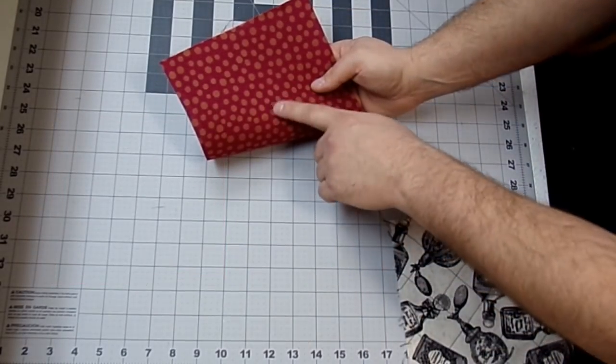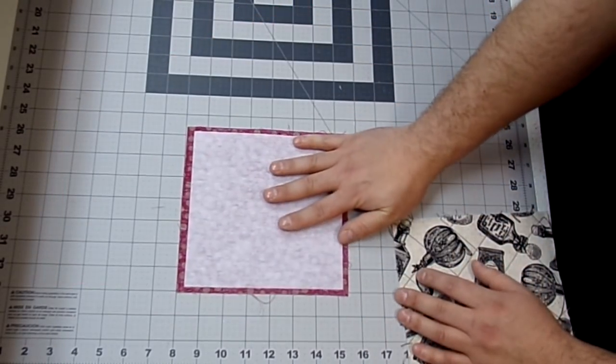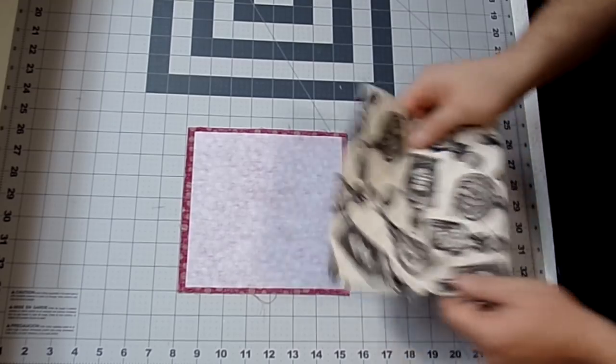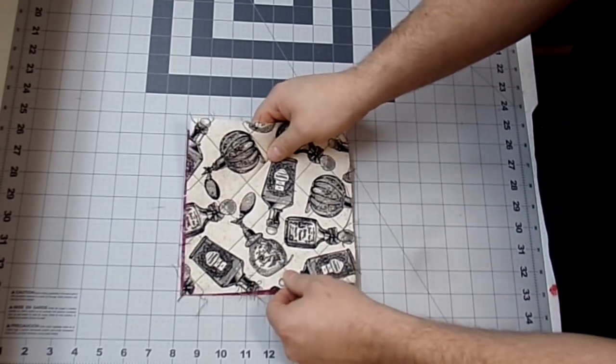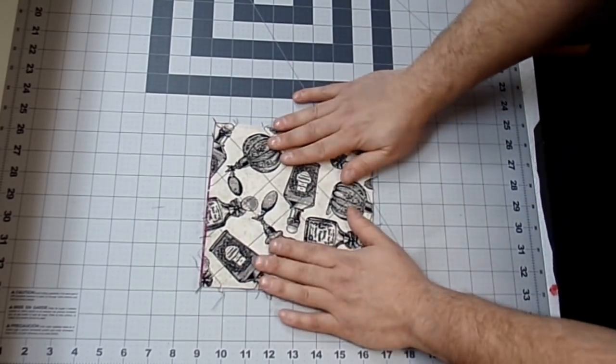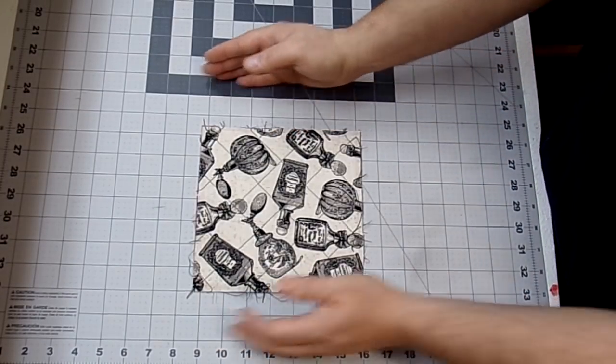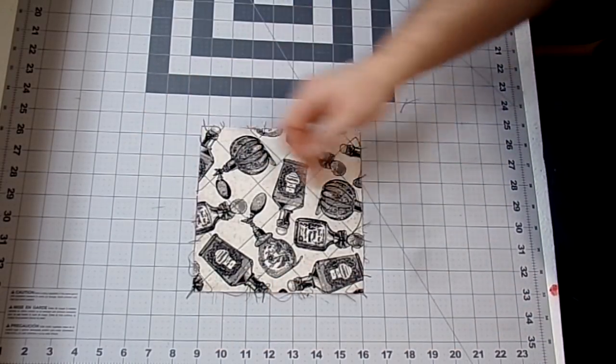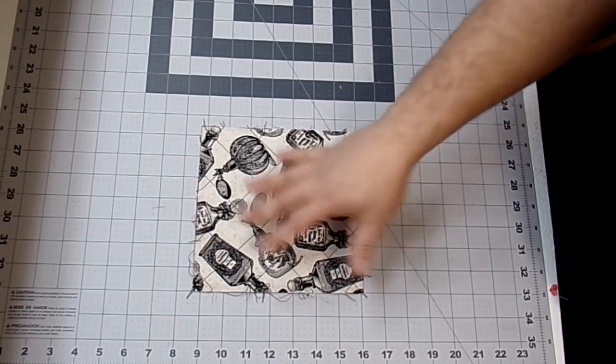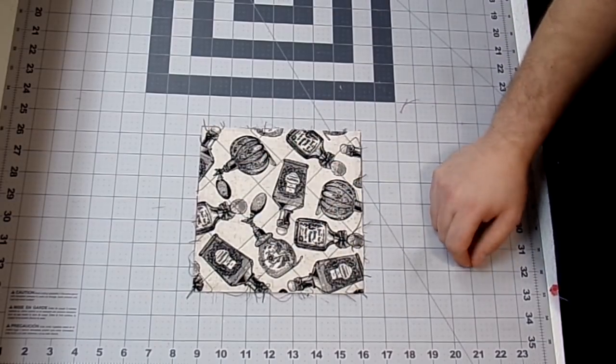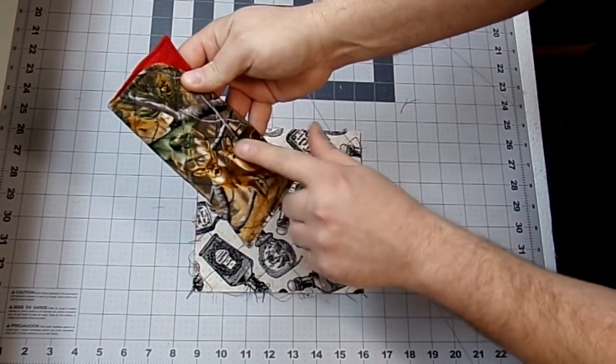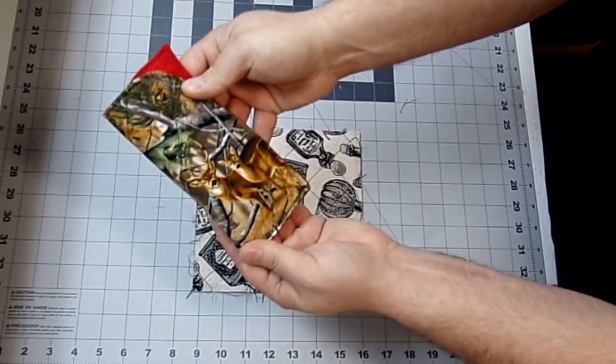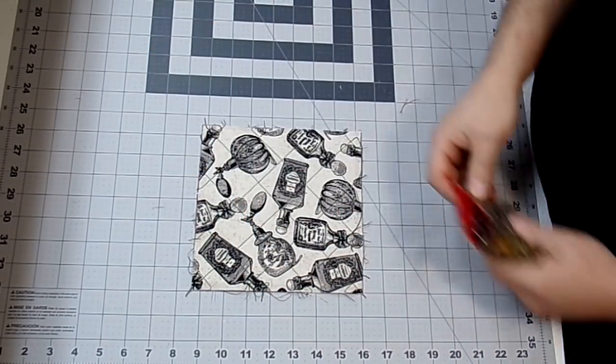Now I'm just going to take my lining fabric, and I'm going to lay that face down. And then I'm going to take my outside fabric, and I'm going to lay that face up. And you want to make sure that your print is going the right way. This will be the top, and this will be the bottom. If you have a print like this where it really doesn't matter, you'll be fine. But like on this one, I fussy cut the deer because I wanted it on the front. So you just want to make sure that it's going the right direction.